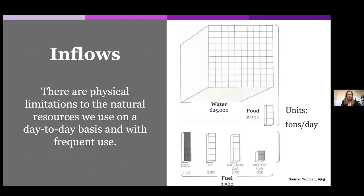The inflows into this hypothetical city are inflows of water, food, and fuel. The units here are in tons per day, and these blocks represent the magnitude of water inputs, food, and fuel. You'll see that the fuel is predominantly fossil fuels — in the 1960s, that's coal, oil, natural gas, and motor fuels. We have changed a little bit since this scenario of energy supply, but not too much — we are still pretty much dependent on fossil fuels today.